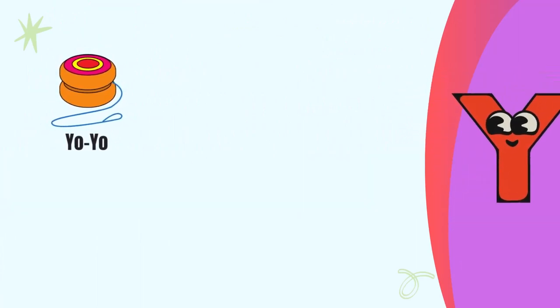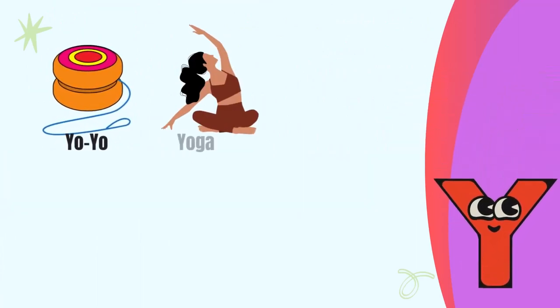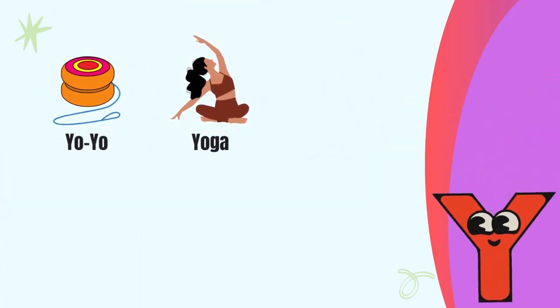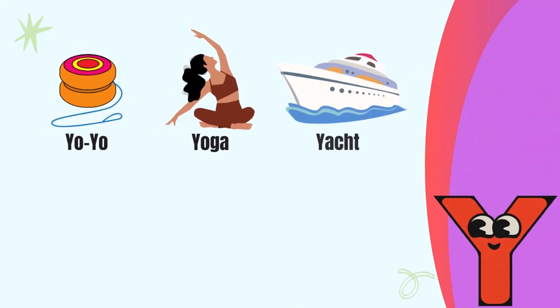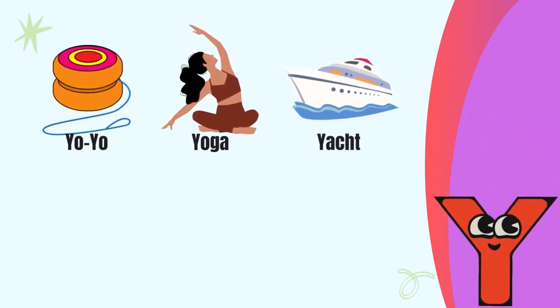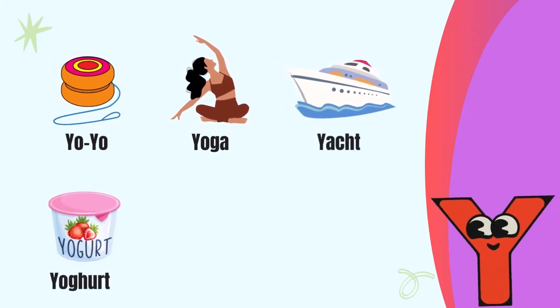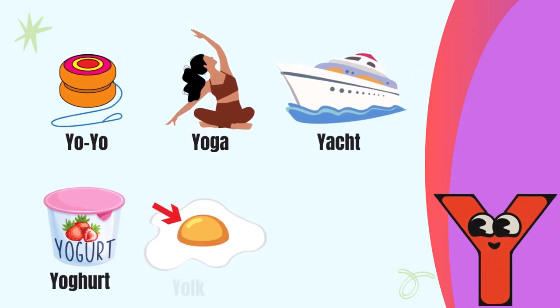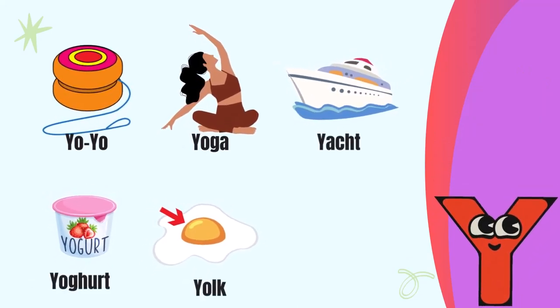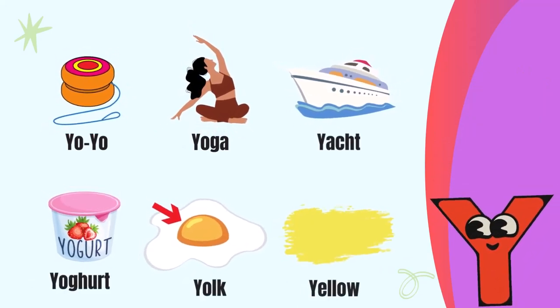Letter Y. Y for yo-yo, Y for yoga, Y for yacht, Y for yogurt, Y for yolk, Y for yellow.